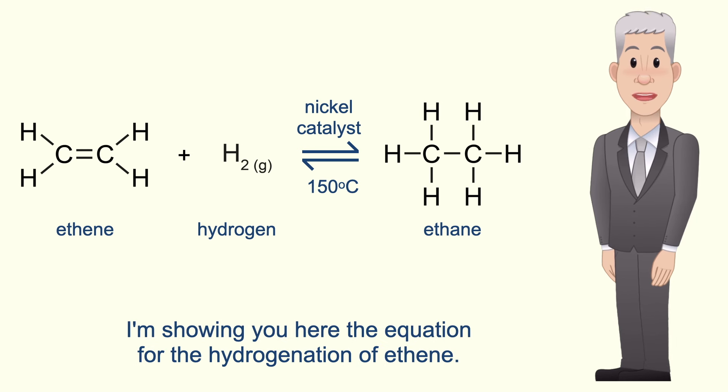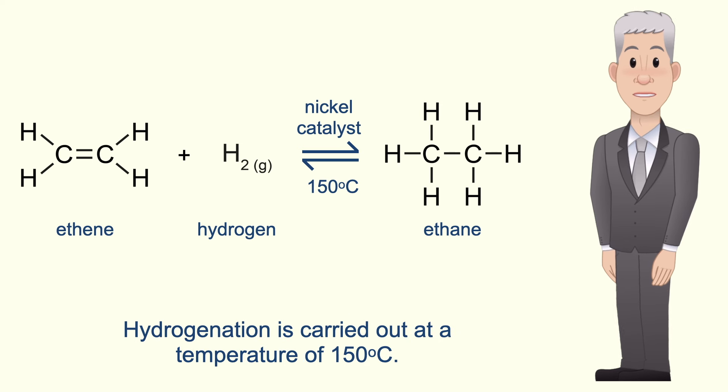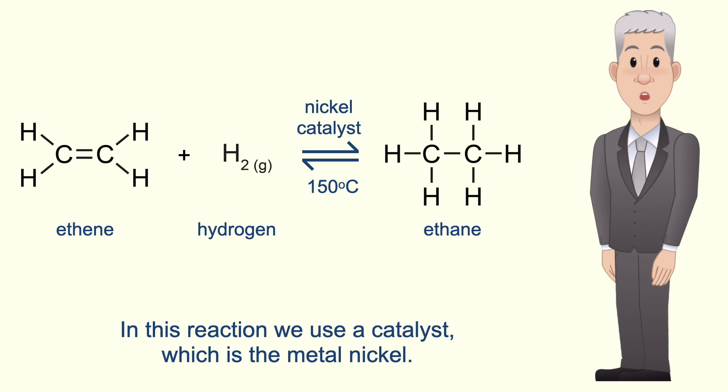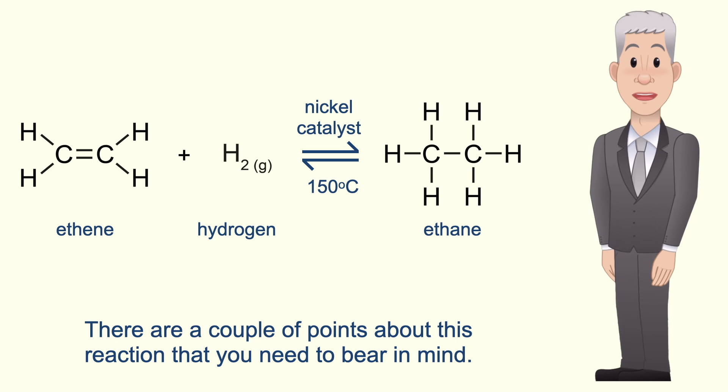I'm showing you here the equation for the hydrogenation of ethene. Hydrogenation is carried out at the temperature of 150 degrees Celsius, and in this reaction we use a catalyst which is the metal nickel. Now there are a couple of points about this reaction that you need to bear in mind.